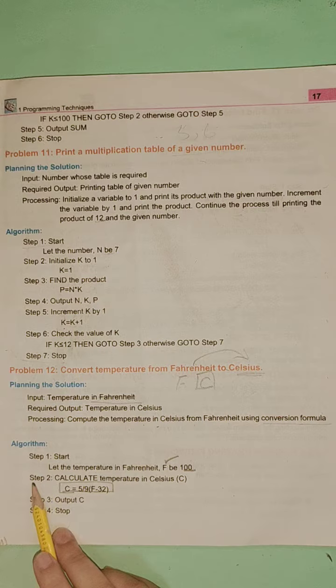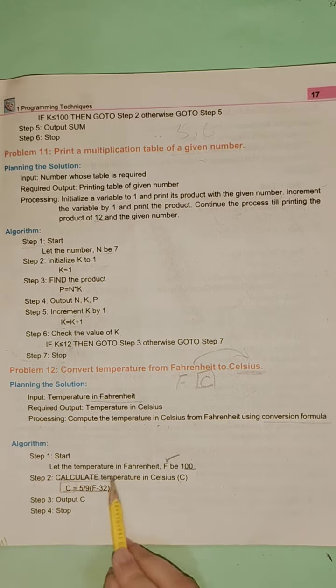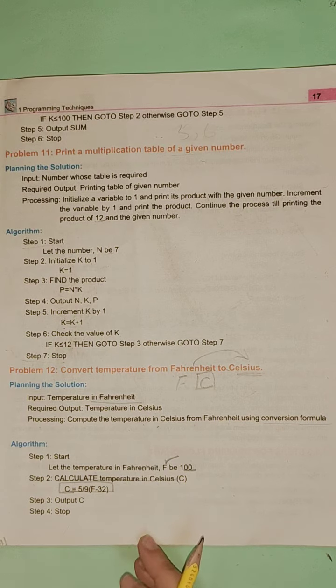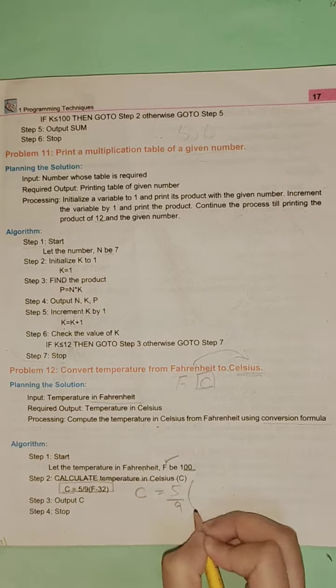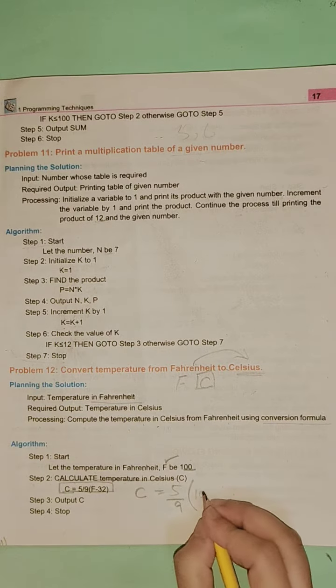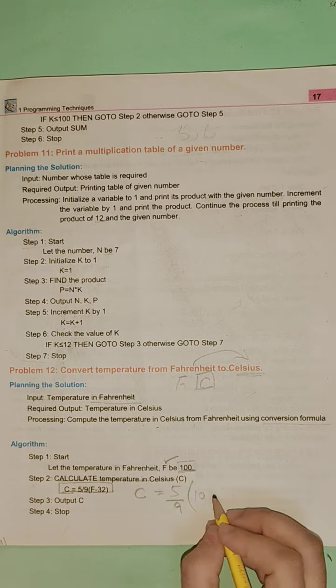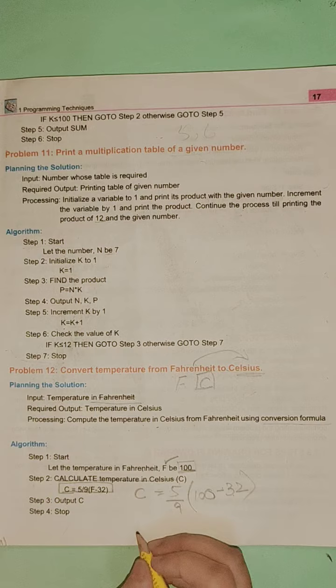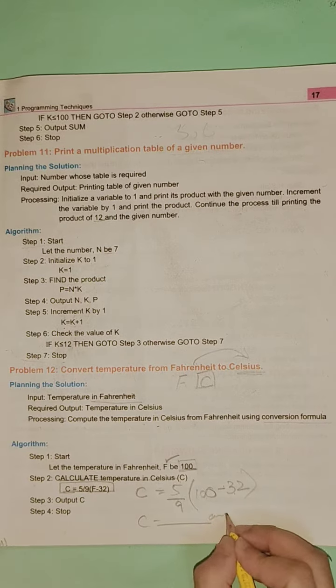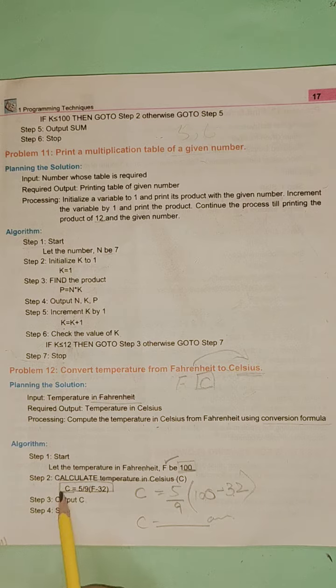Step number two: Calculate temperature in Celsius. This formula we have to write. Celsius equals 5 by 9 times Fahrenheit. We have to find out which temperature value entered, Fahrenheit is 100, so 100 minus 32. Now which value will be Celsius? So output is C.